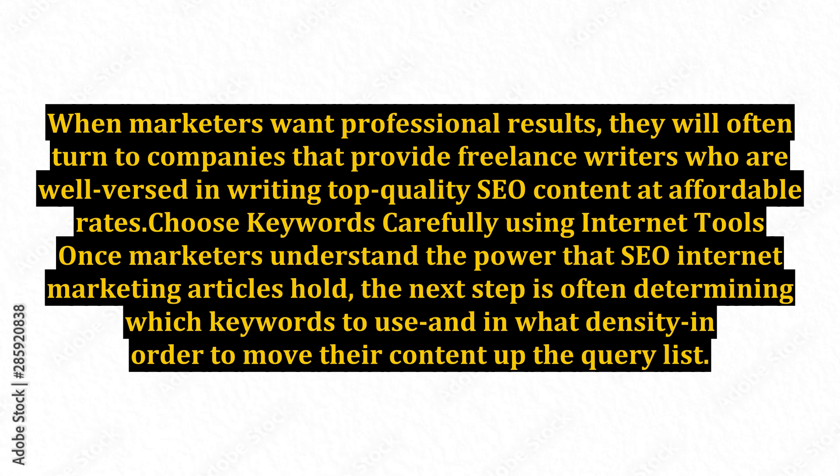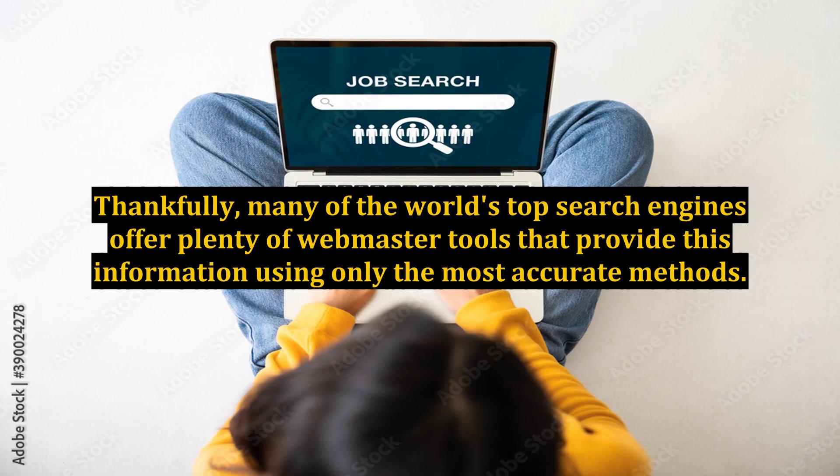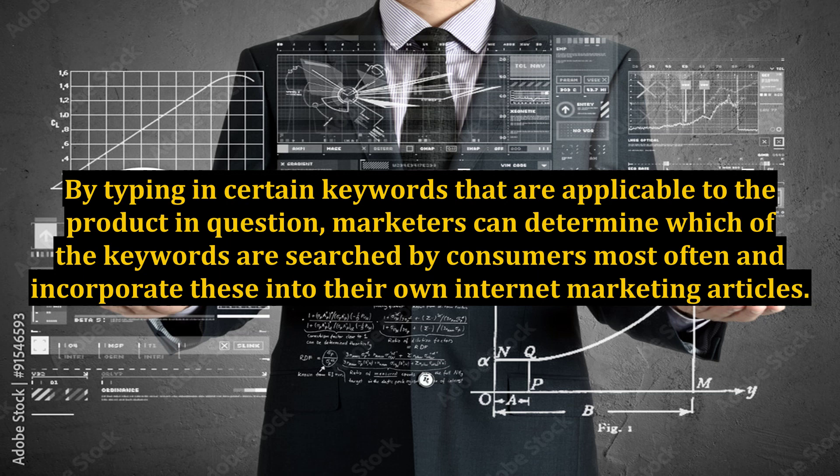Choose keywords carefully using internet tools. Once marketers understand the power that SEO internet marketing articles hold, the next step is often determining which keywords to use and in what density in order to move their content up the query list. Thankfully, many of the world's top search engines offer plenty of webmaster tools that provide this information using only the most accurate methods. By typing in certain keywords that are applicable to the product in question, marketers can determine which of the keywords are searched by consumers most often and incorporate these into their own internet marketing articles.